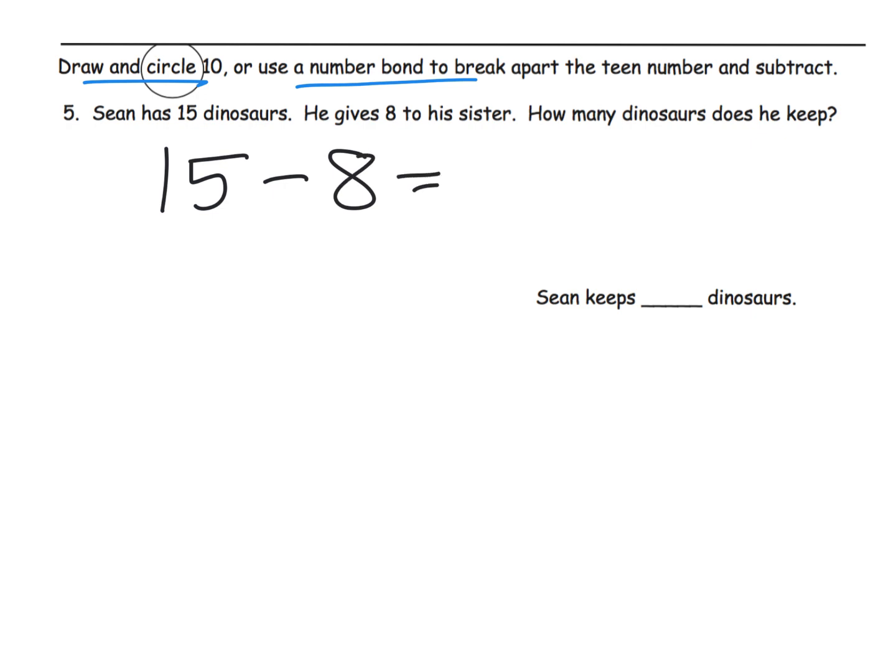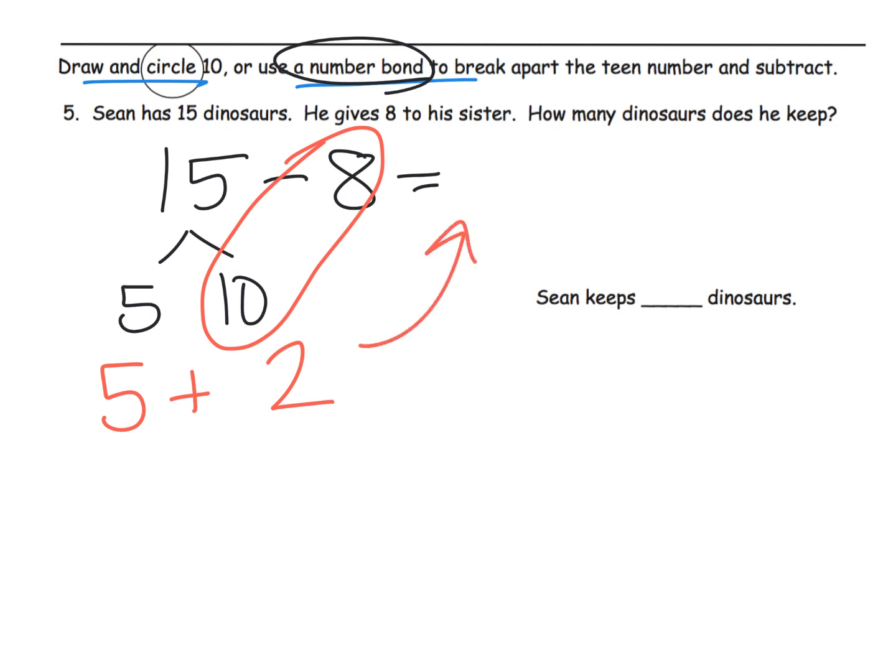So the number sentence that we're dealing with is 15 minus 8. So we have choices, right? So a number bond method. Let's do a number bond method. So I'll say, okay, I'm going to decompose that so I have a 10 because we like to subtract from 10, don't we? So 10 minus 8 is 2 plus the original 5 gives us the answer of 7.